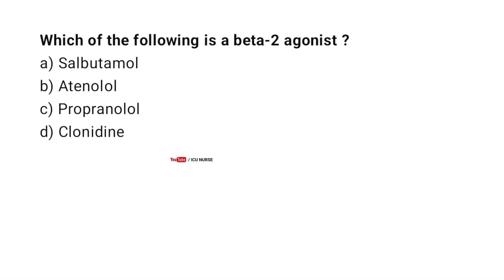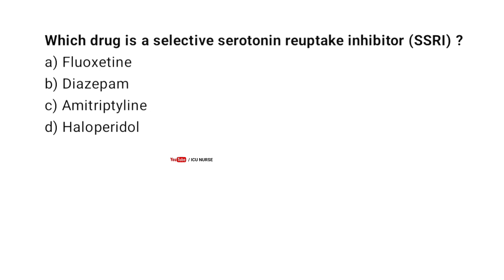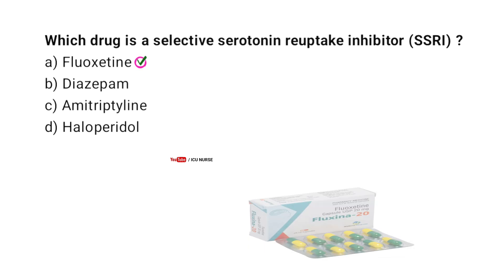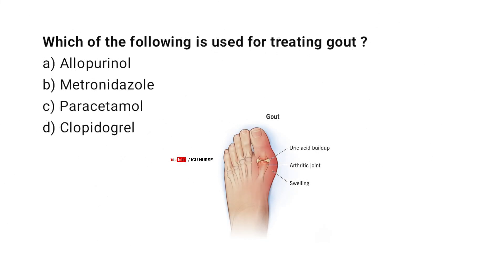Which drug is a selective serotonin reuptake inhibitor? Correct answer A. Fluoxetine. Which of the following is used for treating gout?